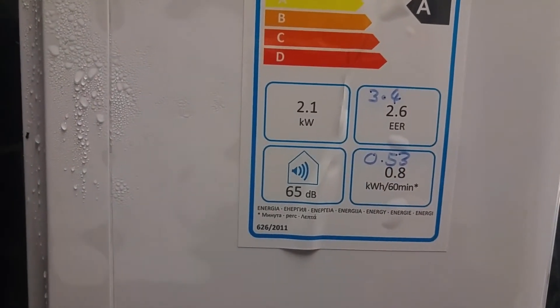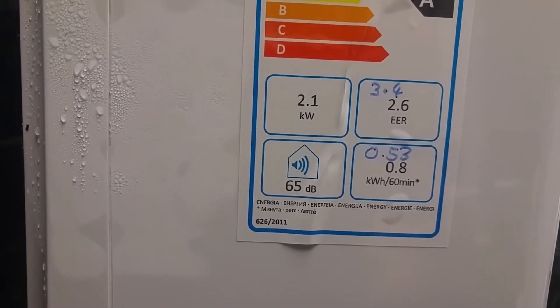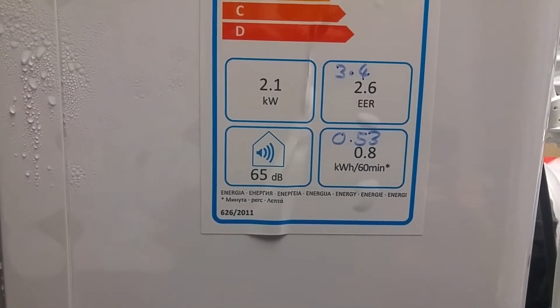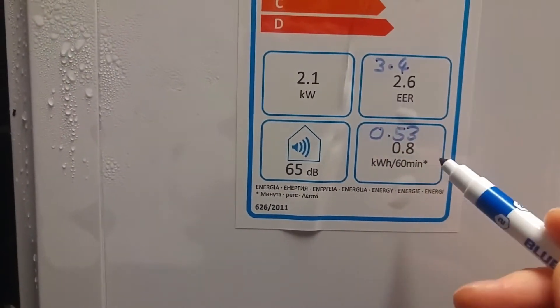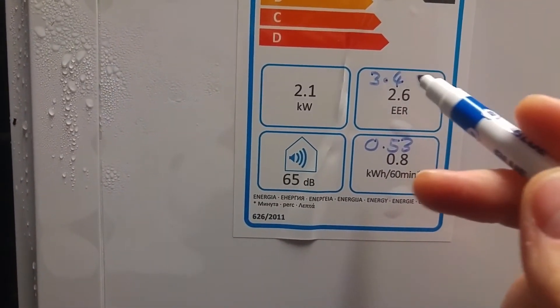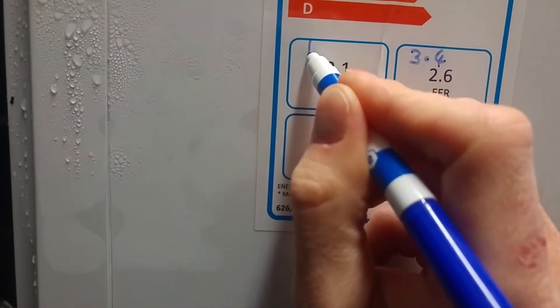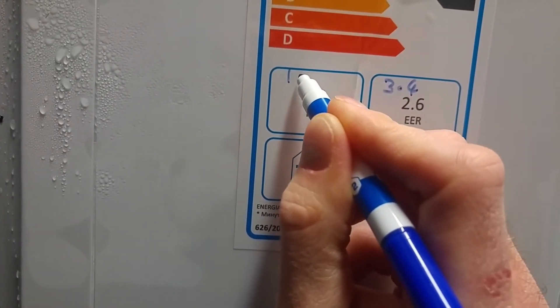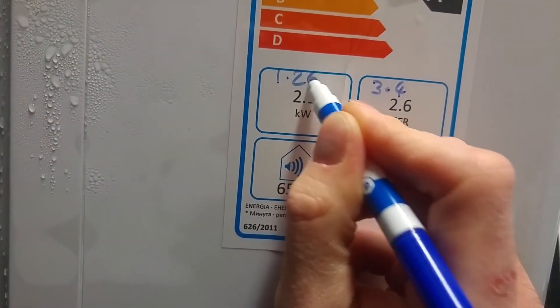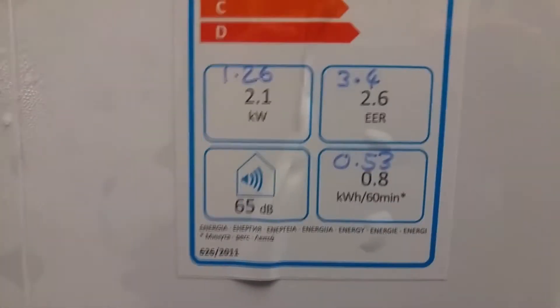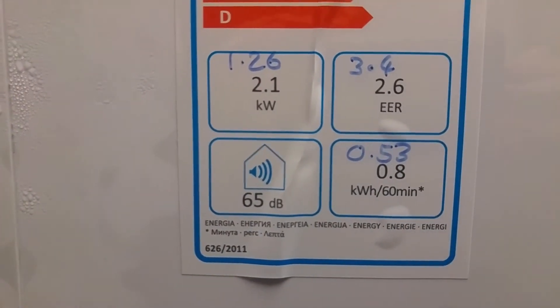But they haven't included the defrost cycle. Because 70% of the time the unit is working, but 30% of the time it's defrosting. So if you multiply that by 0.7, that times that times 0.7 gives you 1.26 kilowatts. So that's just over half of what they say.